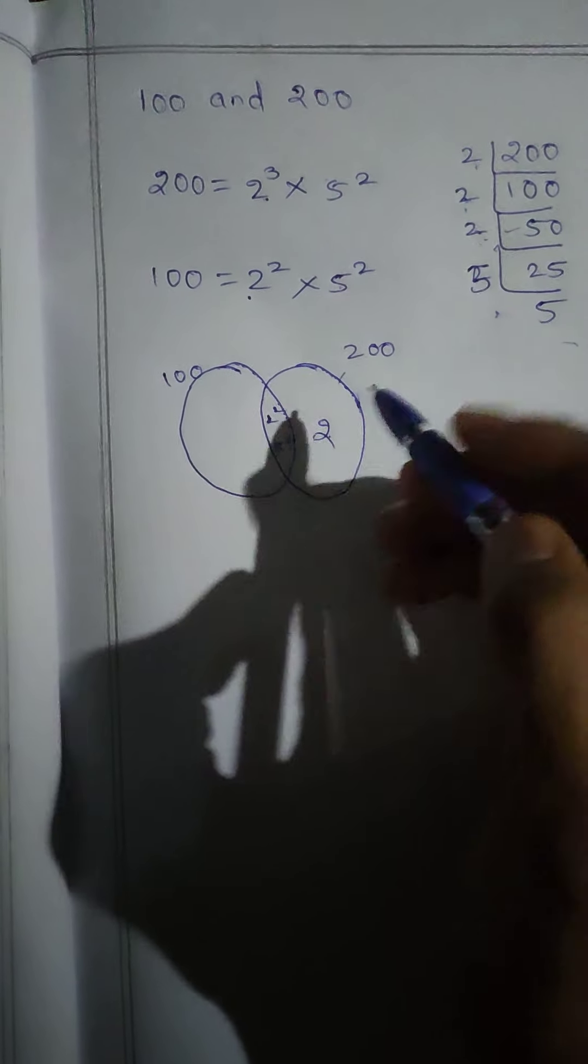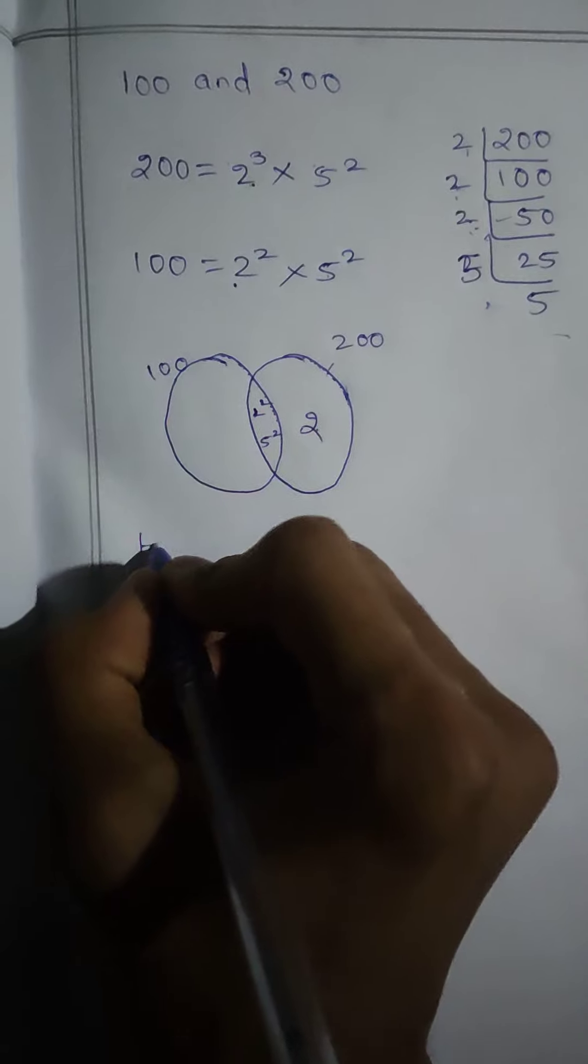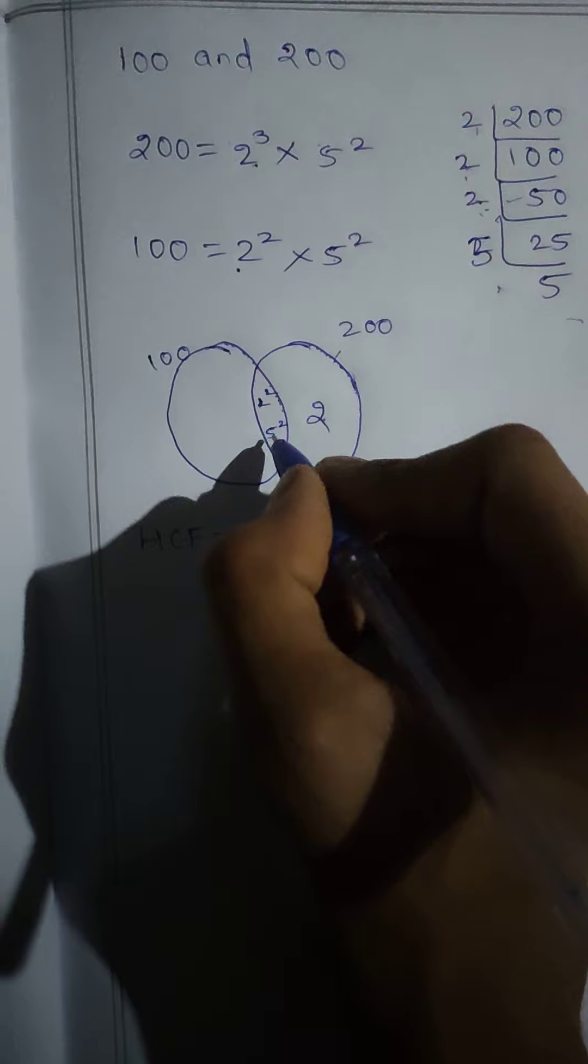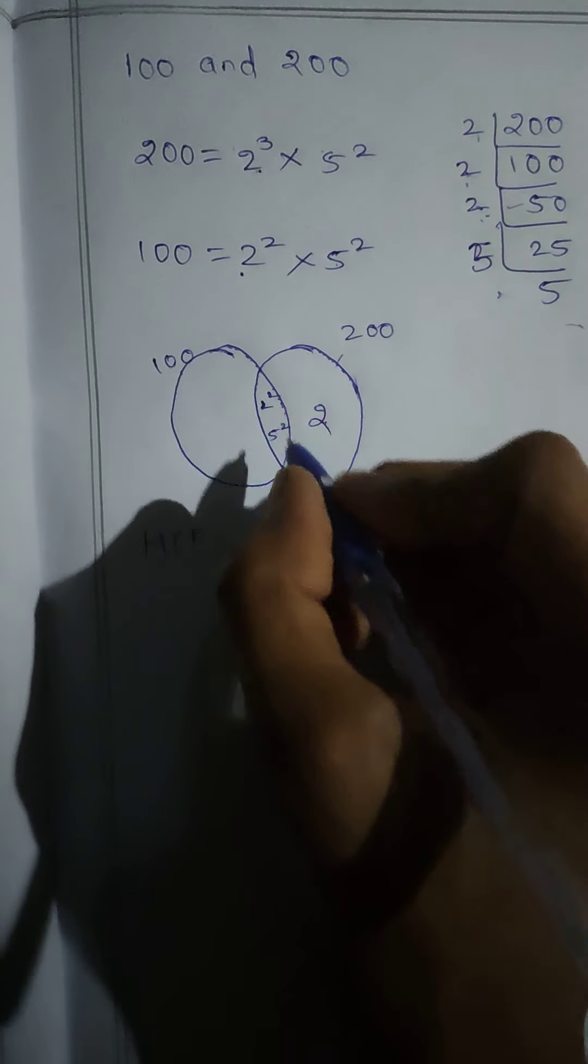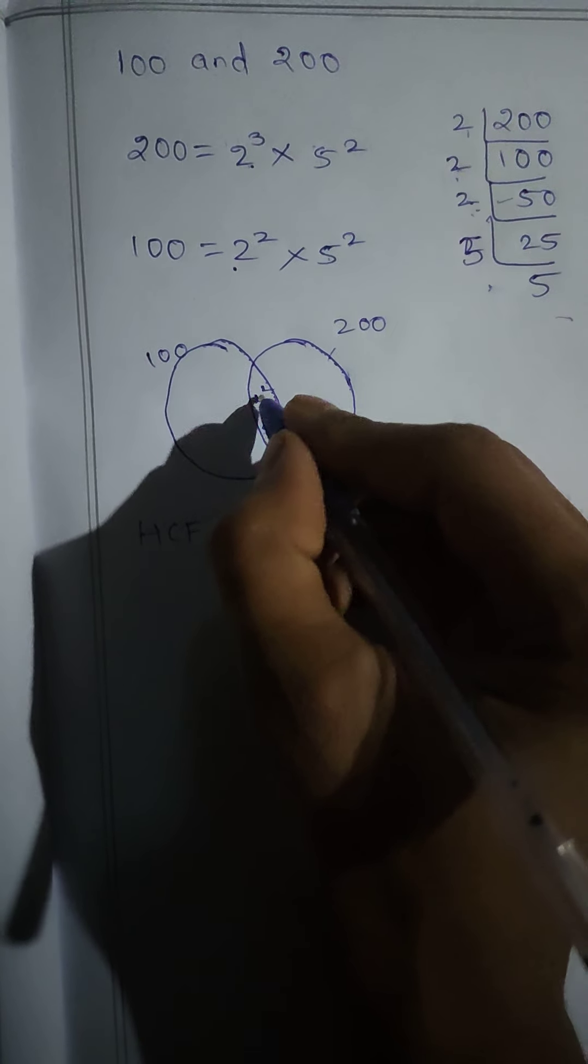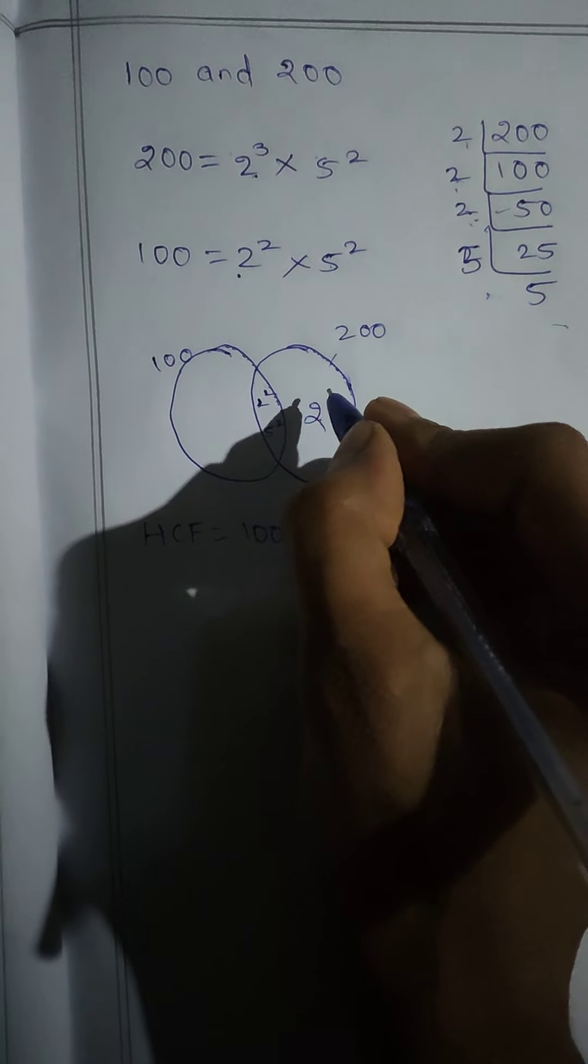What is HCF? HCF means common numbers of both: 2 squared is 4, into 5 squared is 25, means HCF is 100. 5 squared is 25, 2 squared is 4, 25 into 4 is 100.